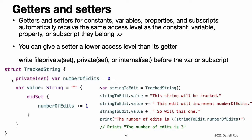This example defines a structure called tracked string, which keeps track of the number of times a string property is modified. The tracked string structure defines a stored string property called value with an initial value of an empty string. The structure also defines a stored integer property called number of edits, which is used to track the number of times that value is modified. This modification tracking is implemented with the did set property observer on the value property, which increments number of edits every time the value property is set to a new value. The tracked string structure and the value property do not provide an explicit access level modifier, and so they both receive the default access level of internal. However, the access level for the number of edits property is marked with a private(set) modifier to indicate that the property's getter still has a default access level of internal, but the property is settable only from within code that is part of the tracked string structure.